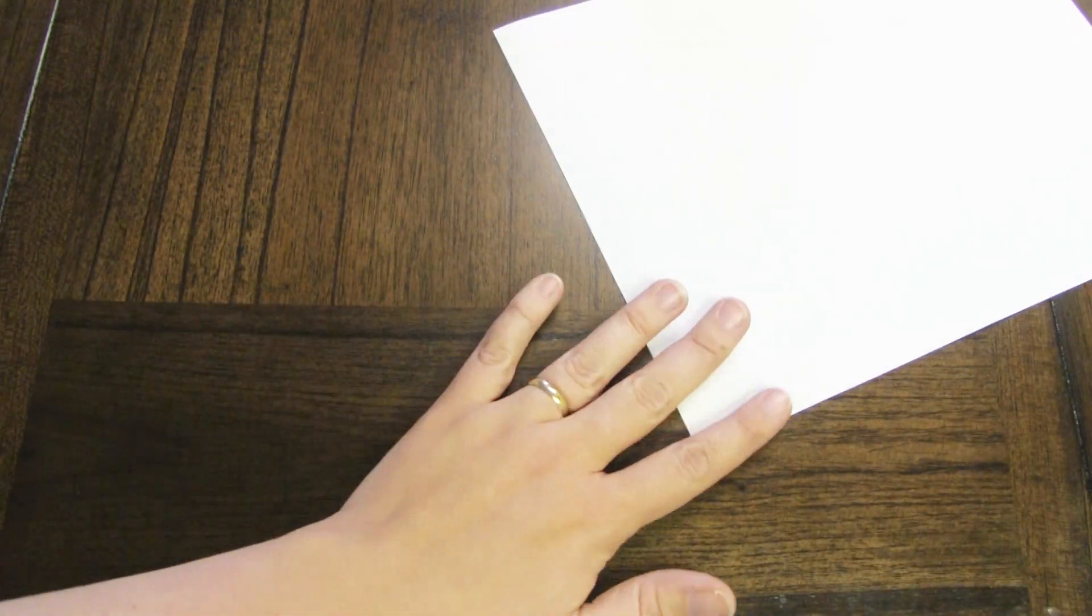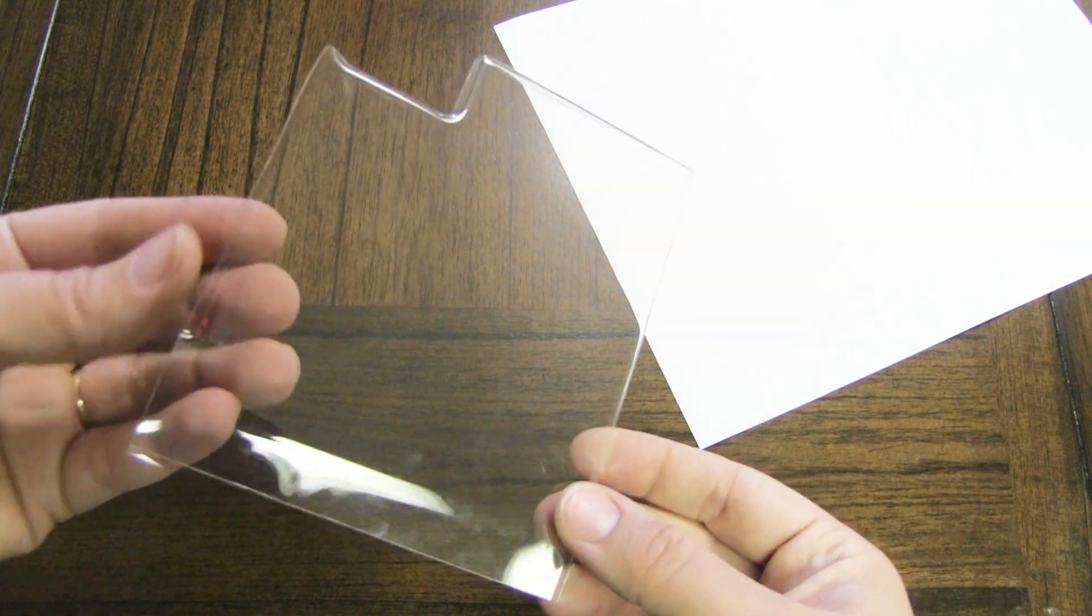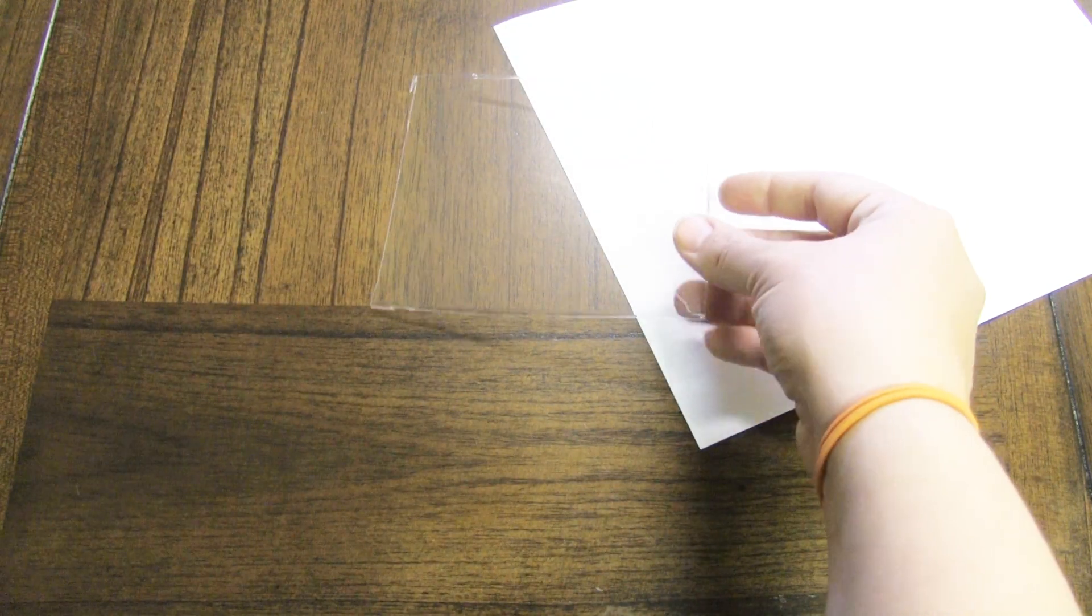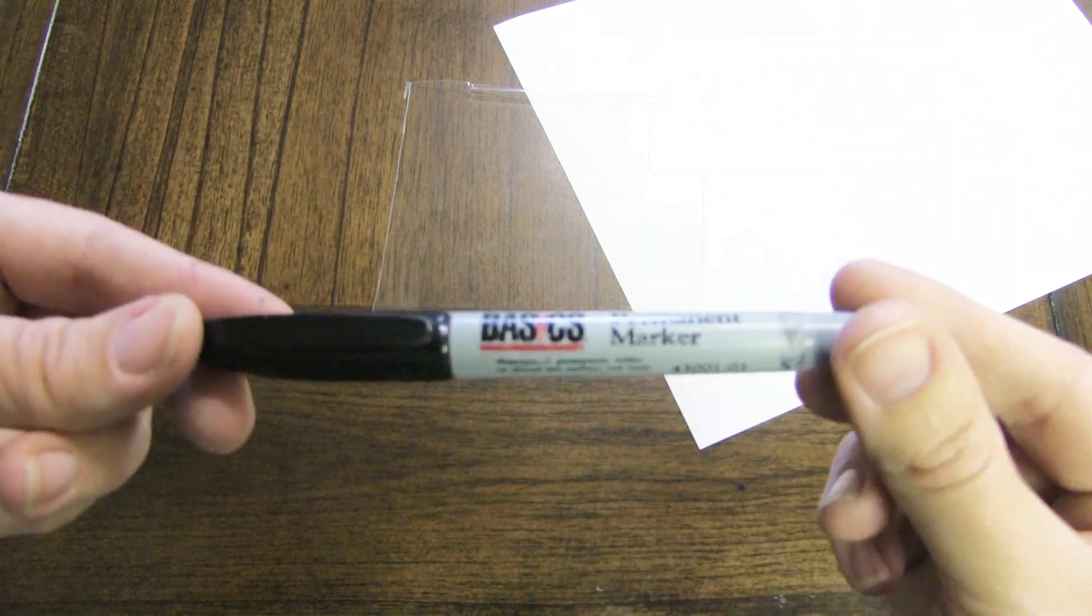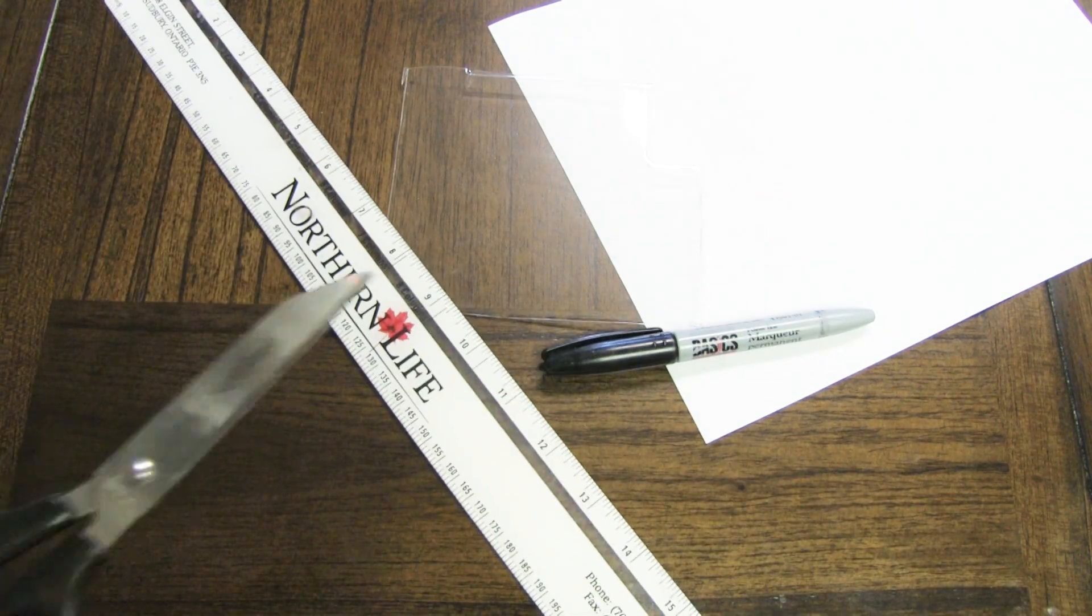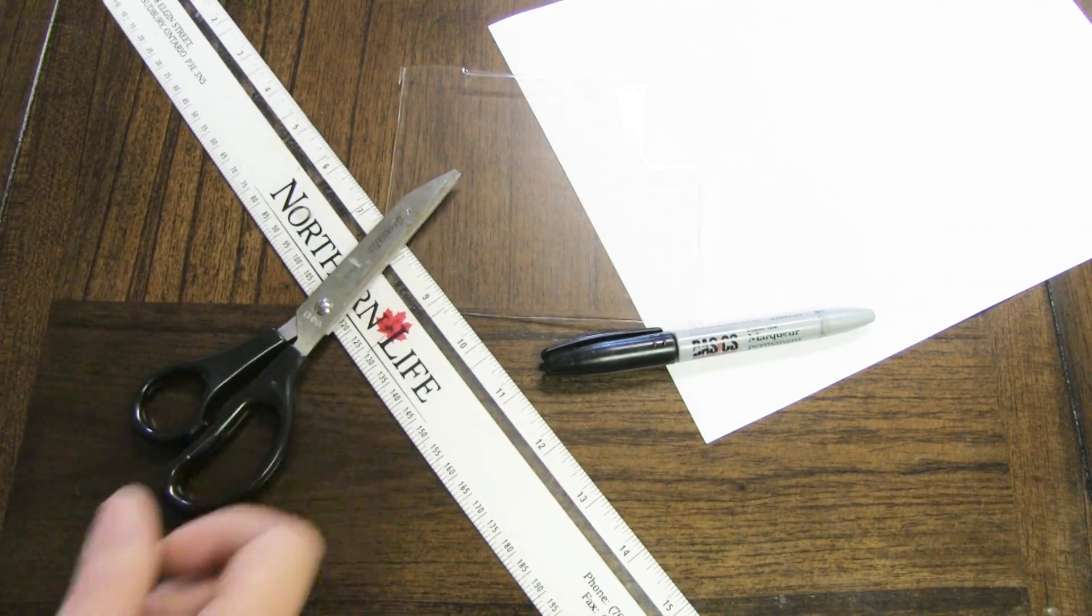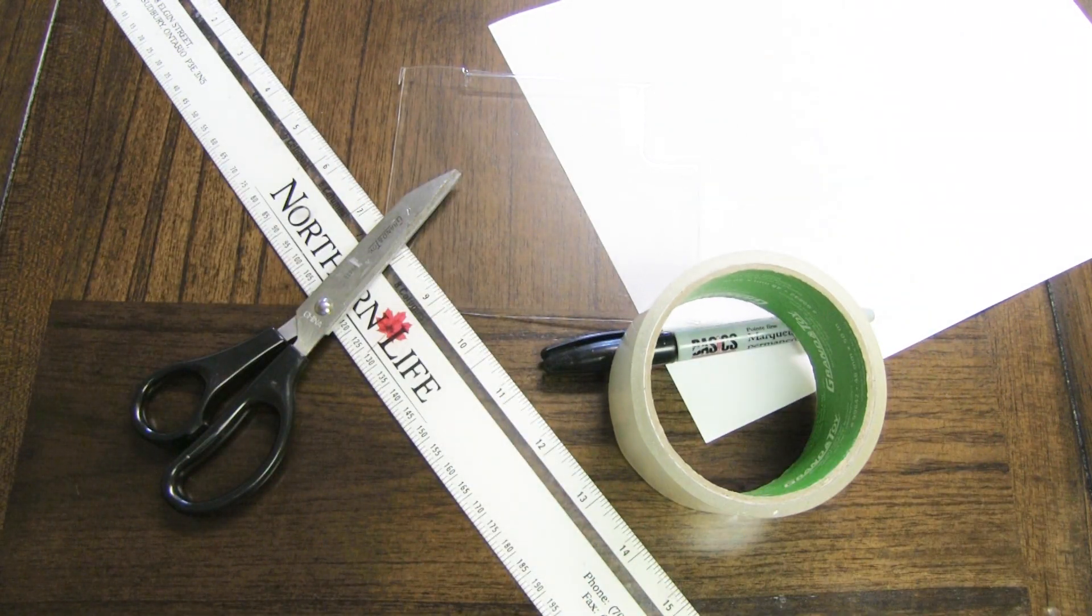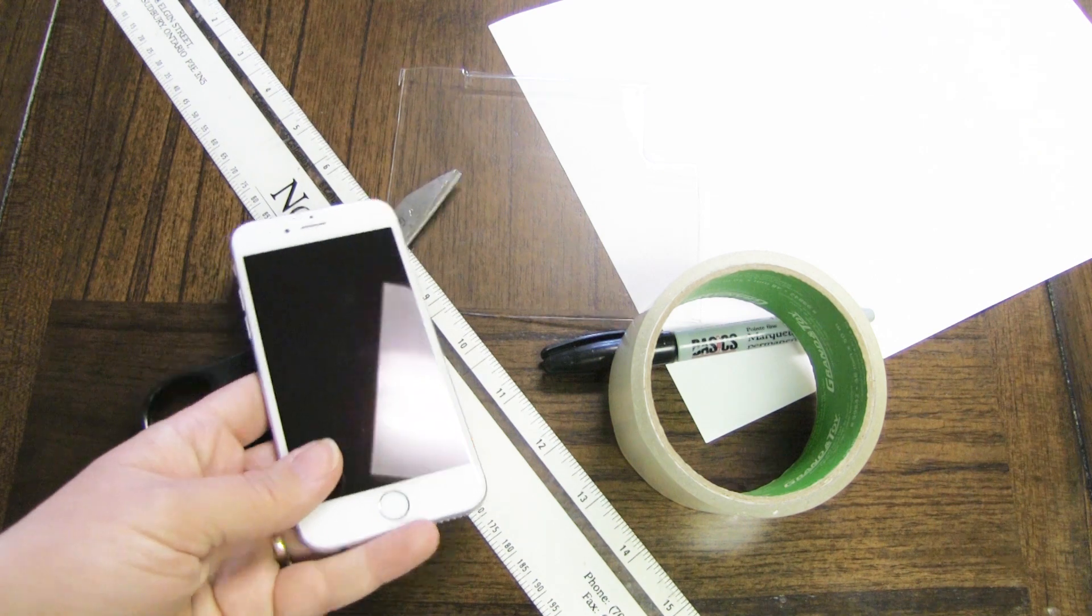So what you're going to need is a piece of paper. Drafting paper works best. A piece of that plastic that is no smaller than four and a half inches by four and a half inches. A marker. A ruler. A pair of scissors. Clear tape like packing tape or one of those small rolls. And of course, a cell phone.